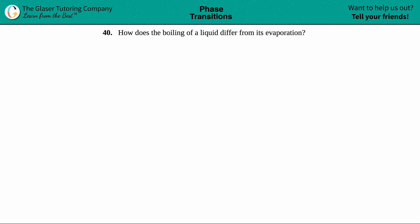Number 40: How does the boiling of a liquid differ from its evaporation? Okay, so this basically comes down to the definition of what a boiling point is and what evaporation means.